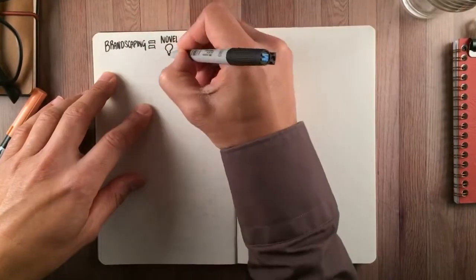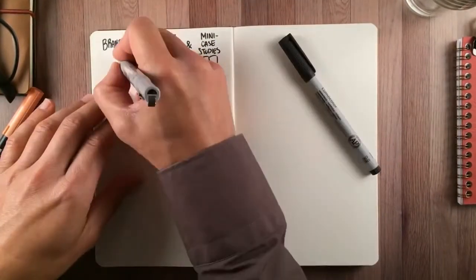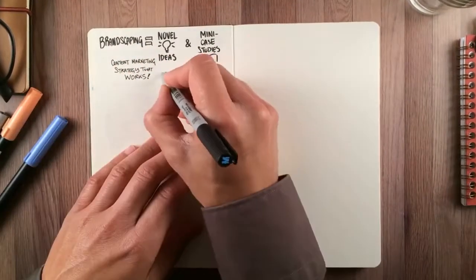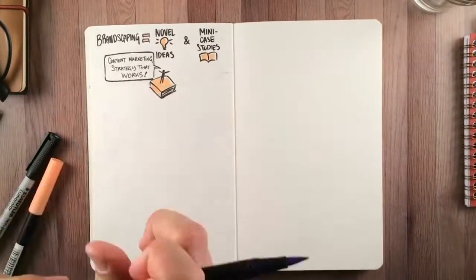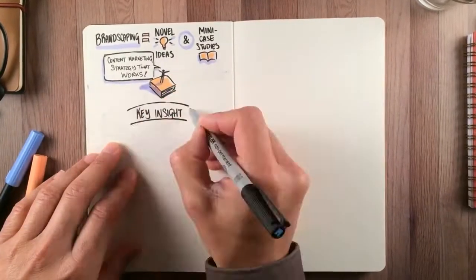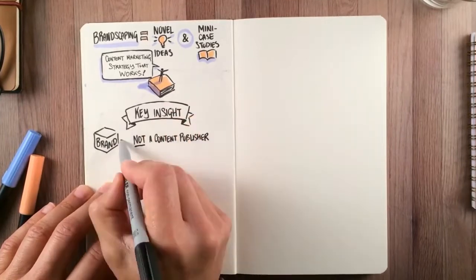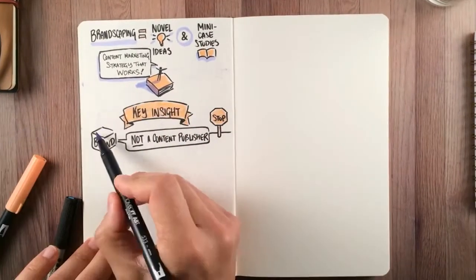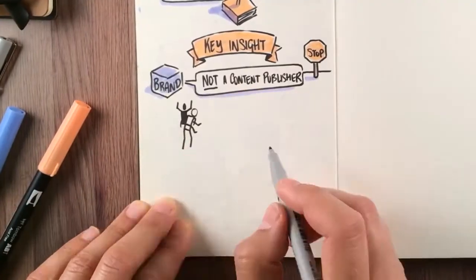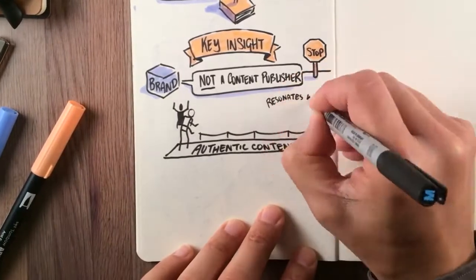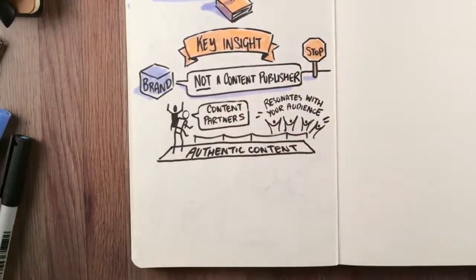Brandscaping is a set of novel ideas and rich mini case studies that illustrate how to develop a content marketing strategy that works. The key insight behind Brandscaping is that your brand is not a content publisher, so stop acting like one. Instead, you should piggyback off people who are already producing the authentic content that resonates within your target audience.